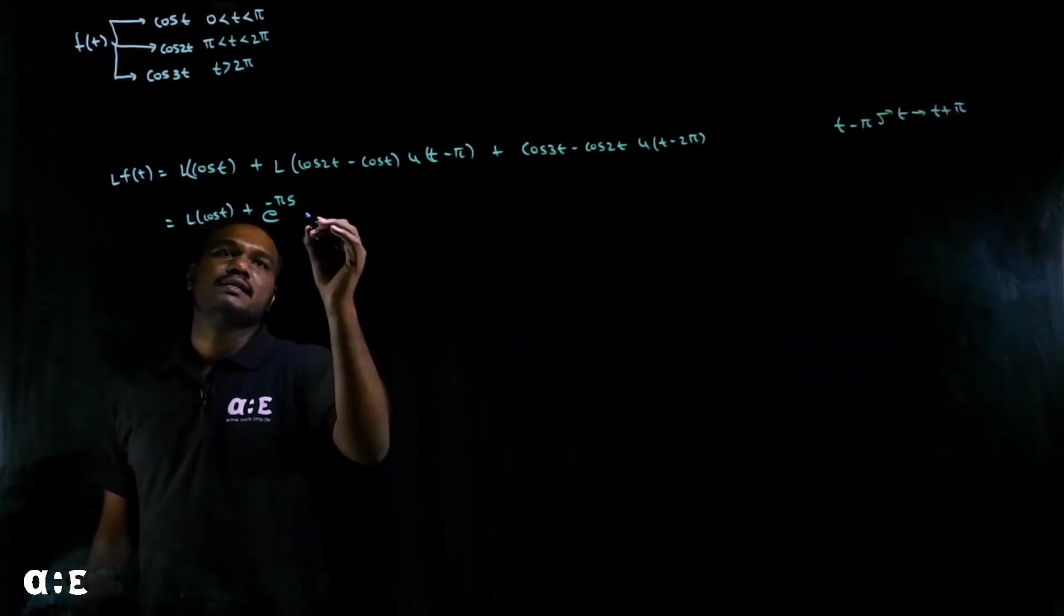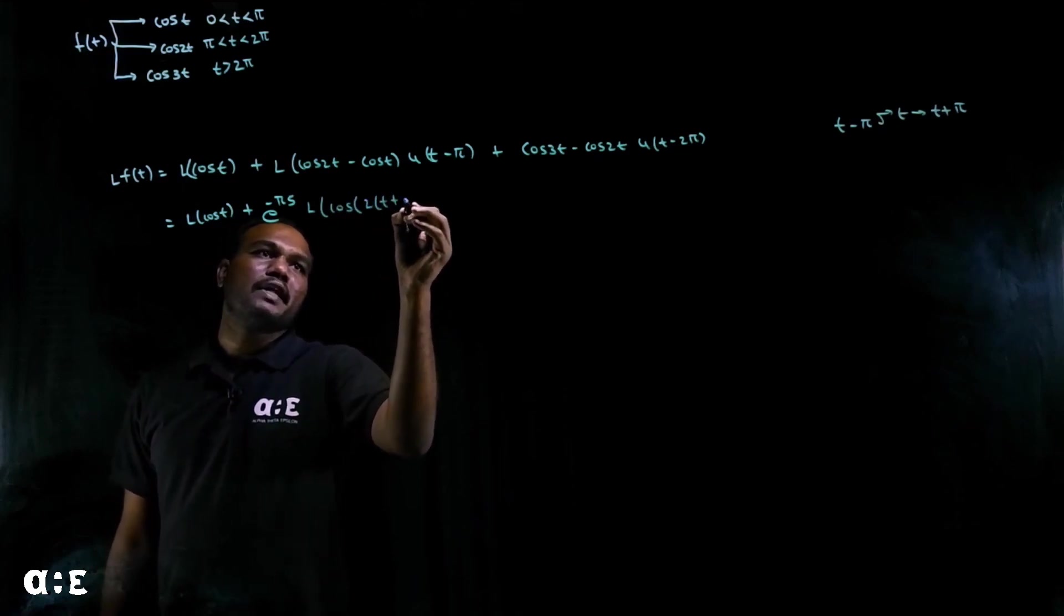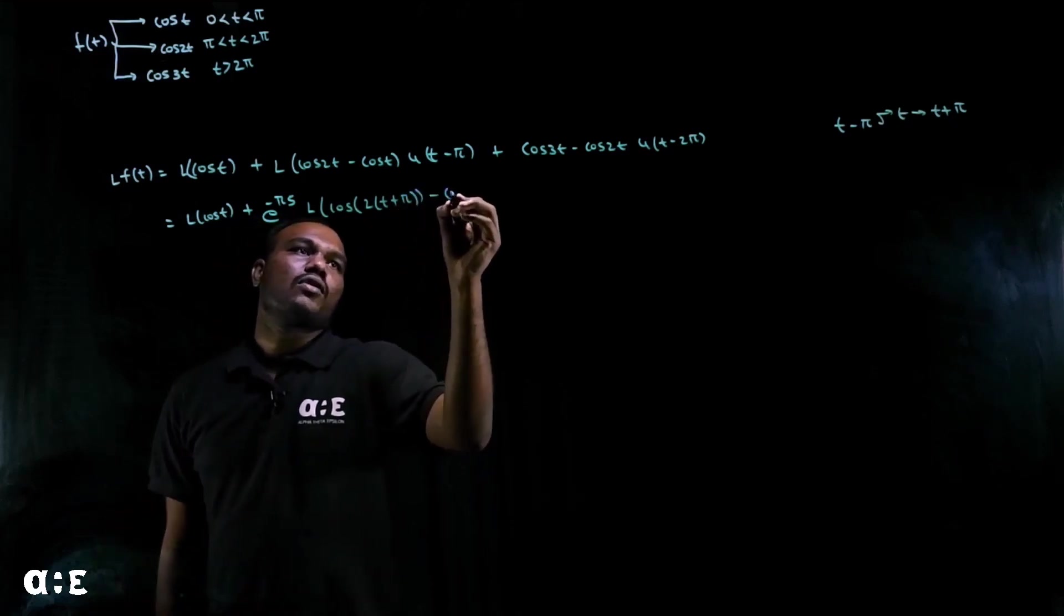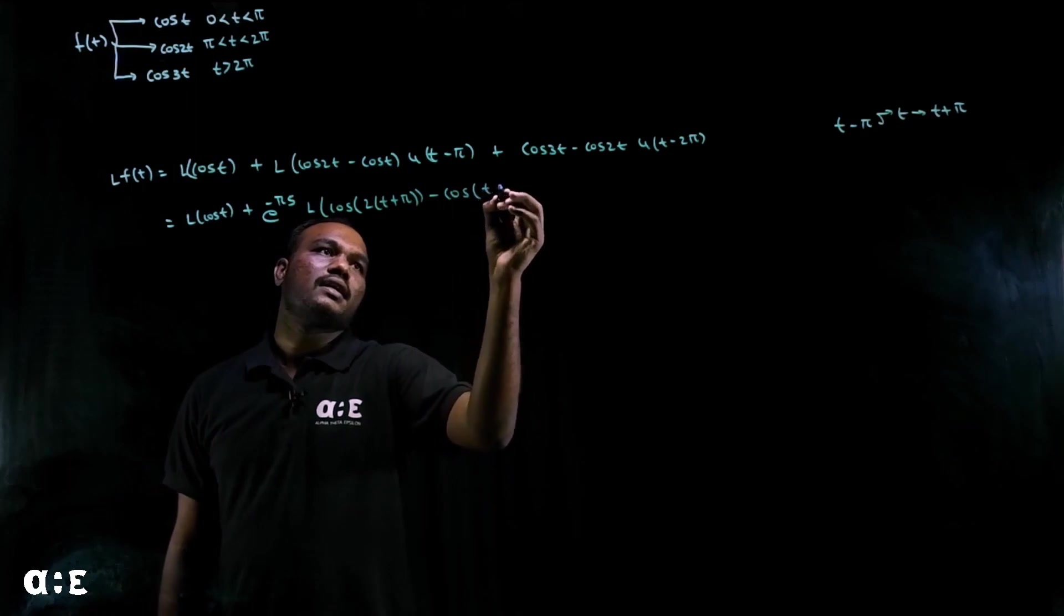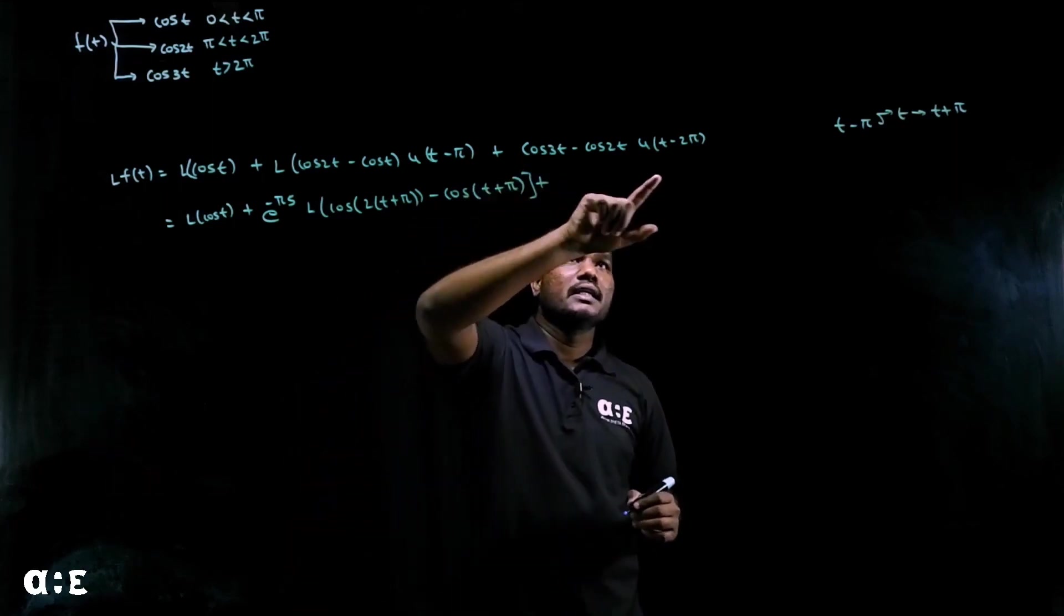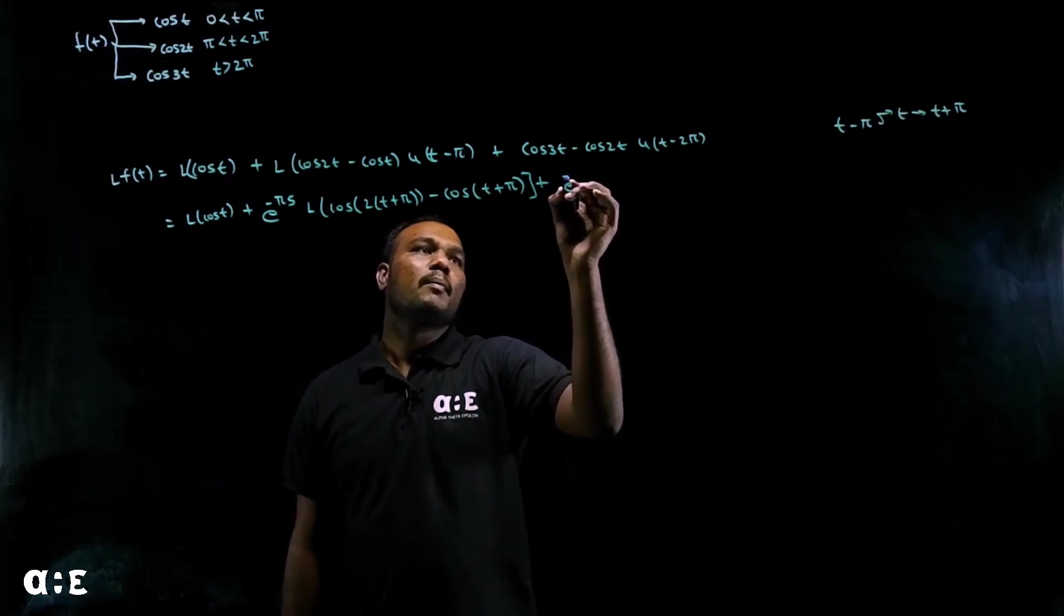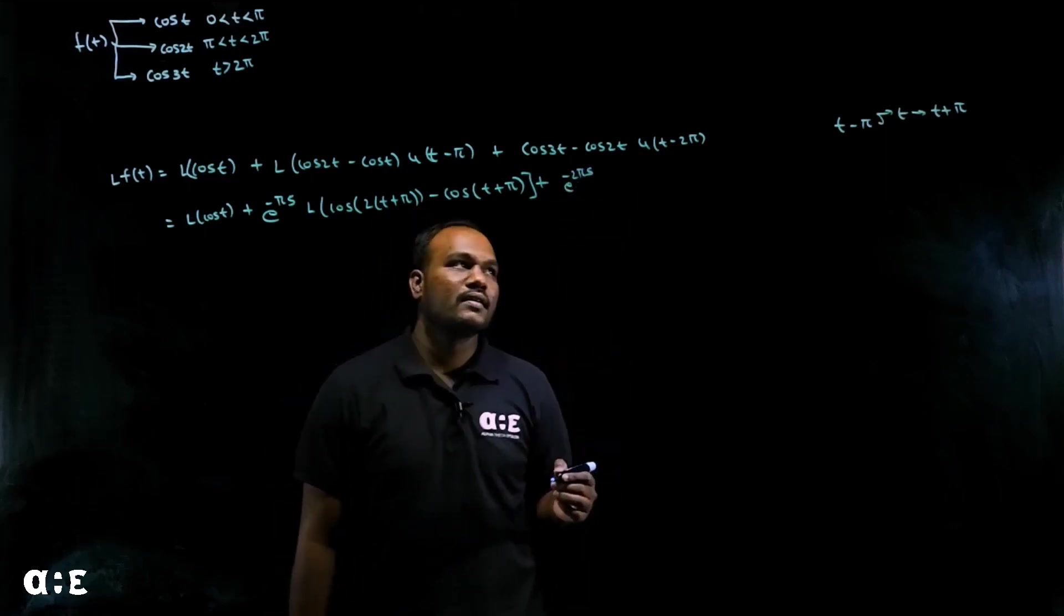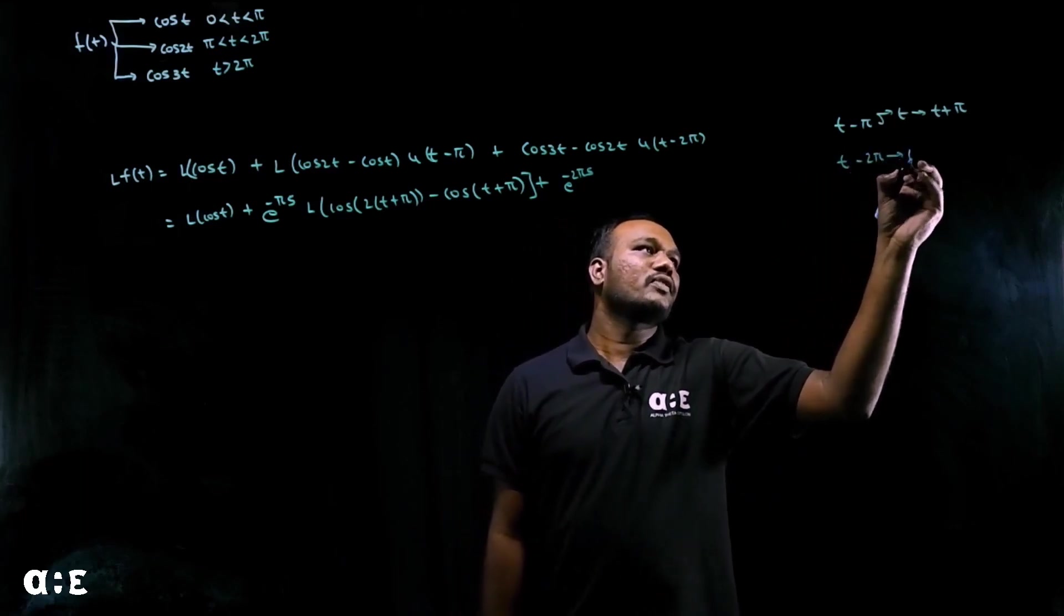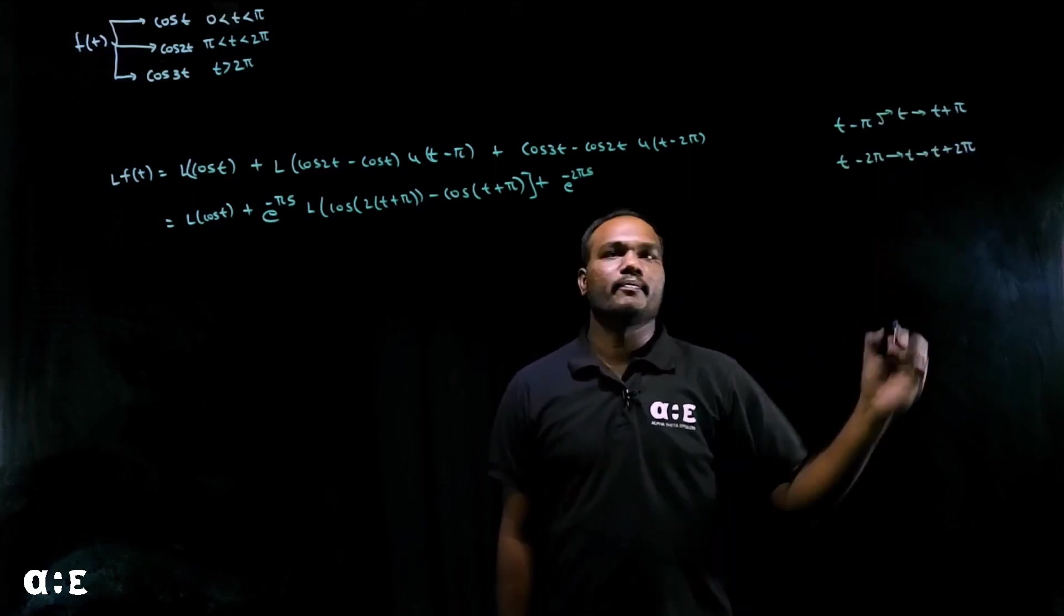So we'll get Laplace of cos(2(T+π)) minus cos(T+π). Plus, to eliminate U again, we need to substitute e^(-2πs). And to eliminate T minus 2π, in place of T substitute T plus 2π.